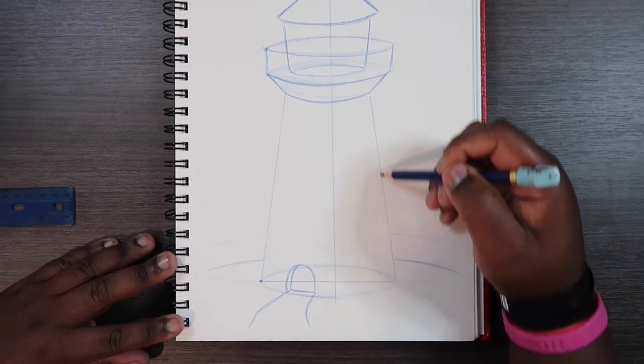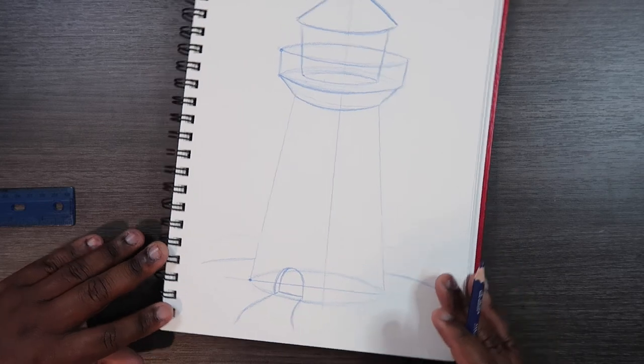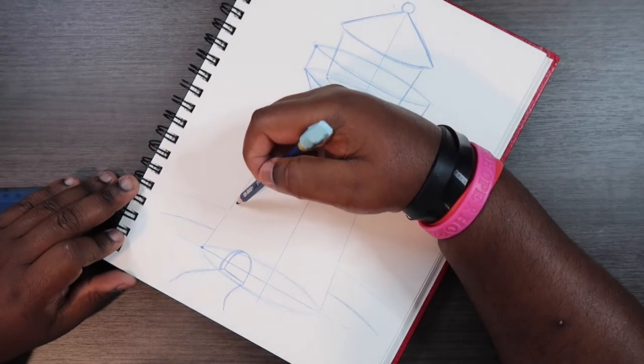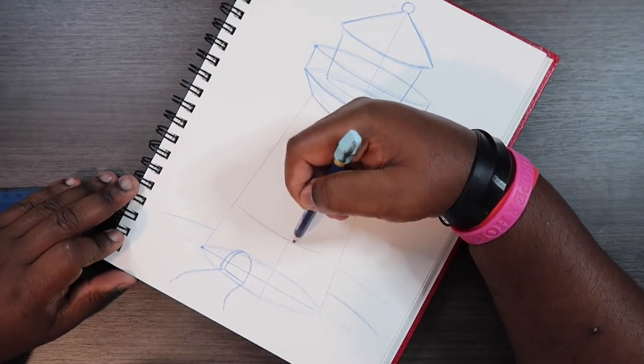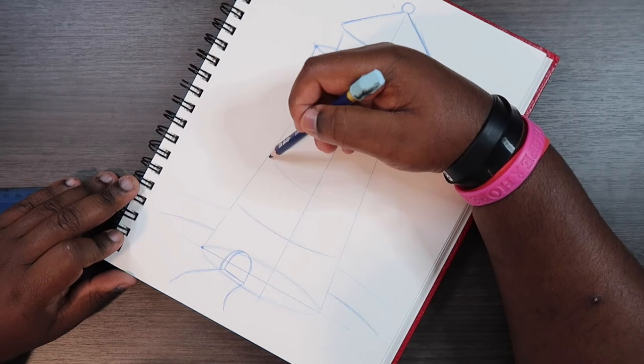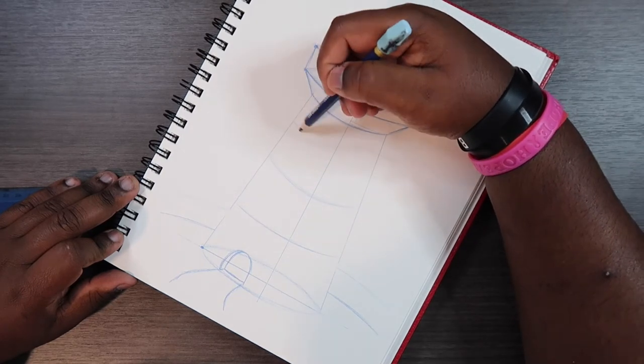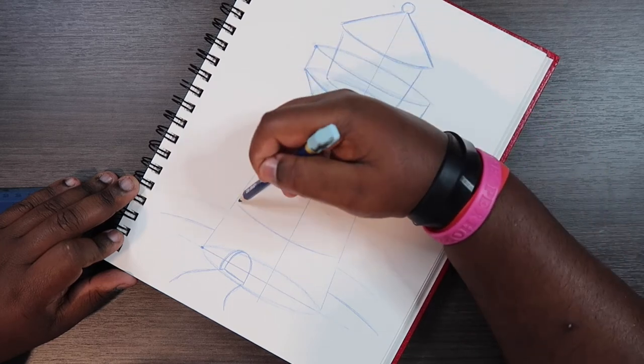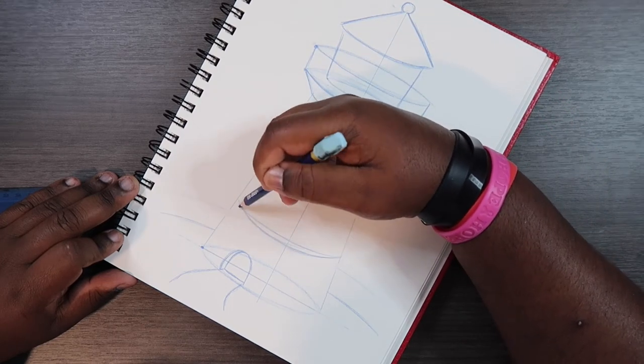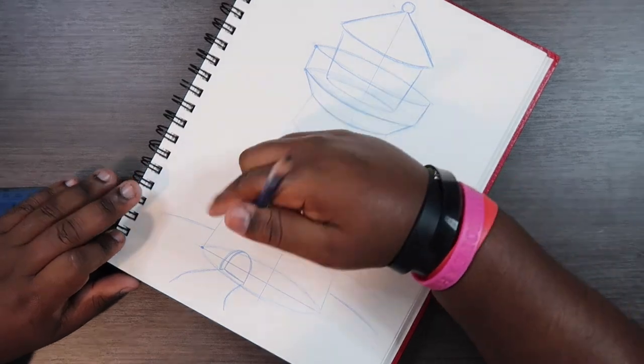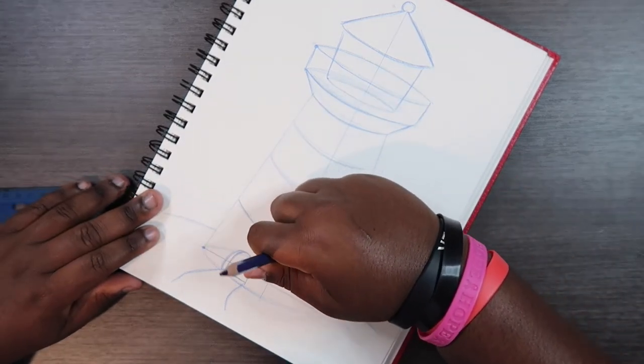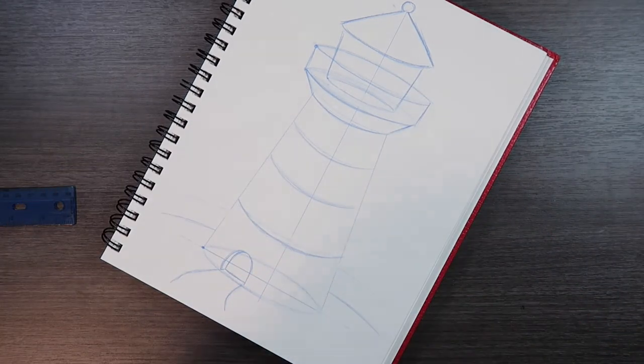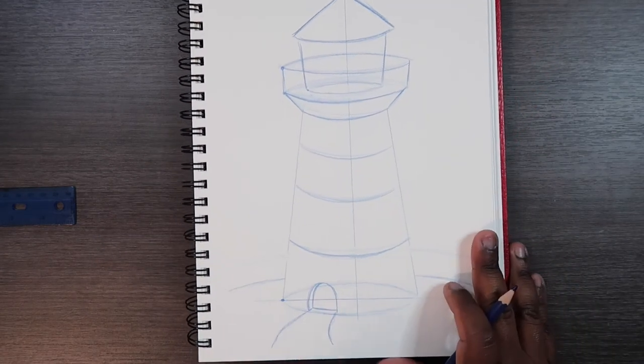And now along this entire building part of the lighthouse, we can divide it into four pieces and just begin to draw some stripes, like so. So we're going to end up with something that looks like that.